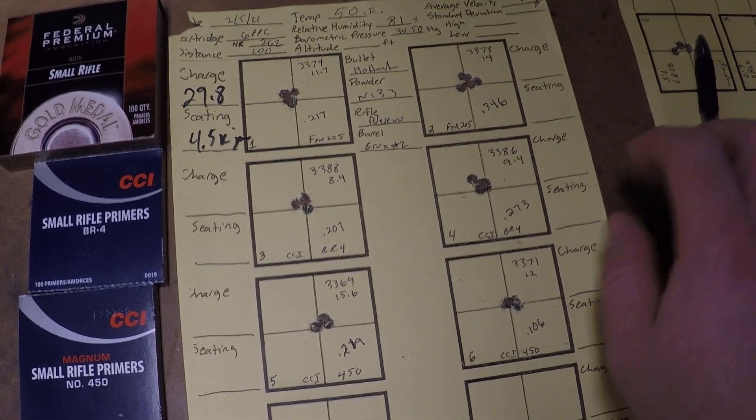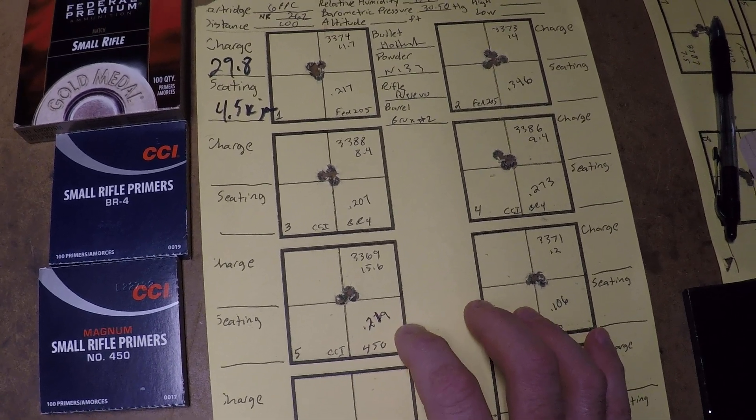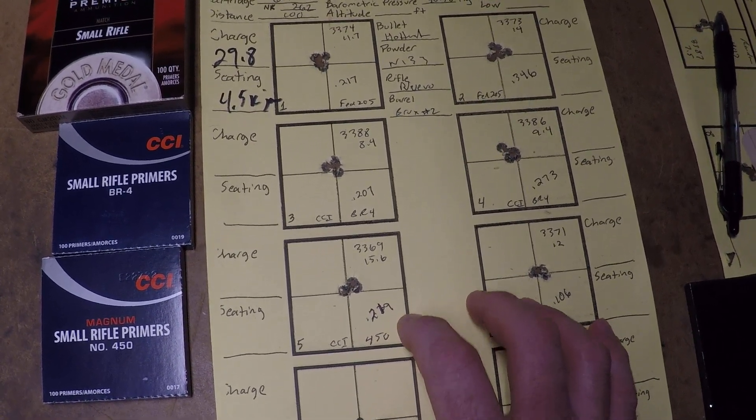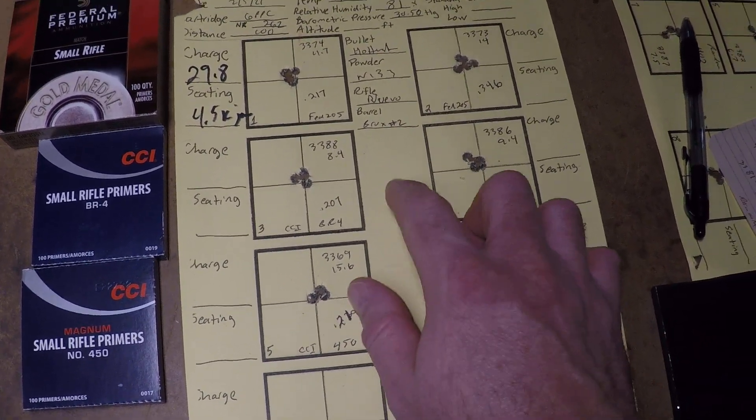So, it seems like number 450 demonstrated pretty good group sizes compared to 205M and BR4.